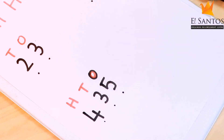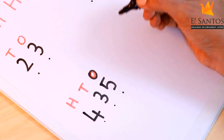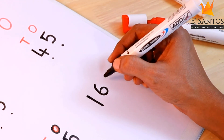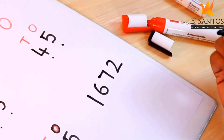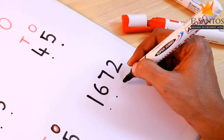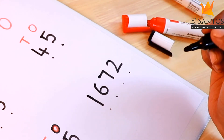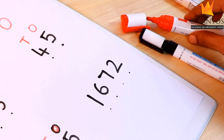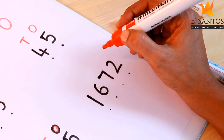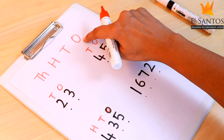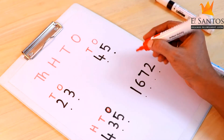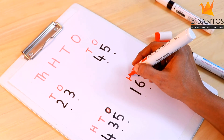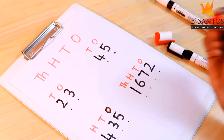Now let's do a four-digit number. Let's write a simple one and count the digits — one, two, three, four. There are four digits, so it's a four-digit number. Let's write the places above the number: ones, tens, hundreds, thousands.